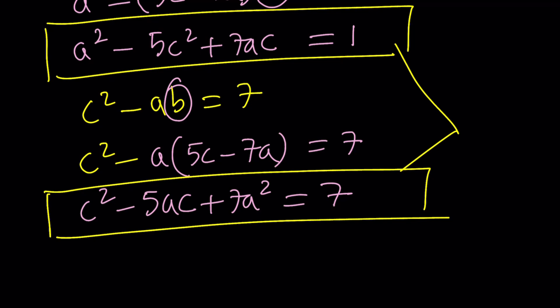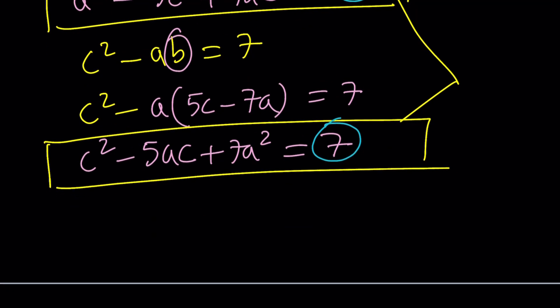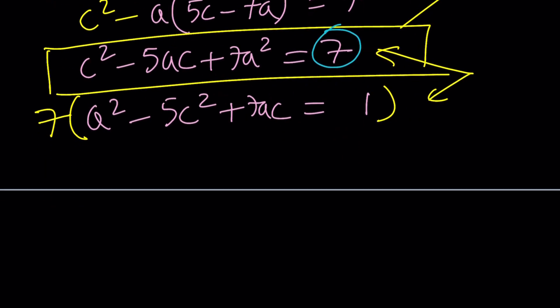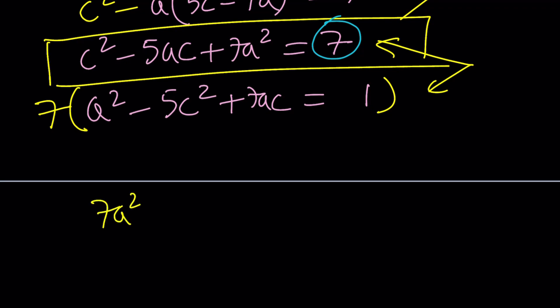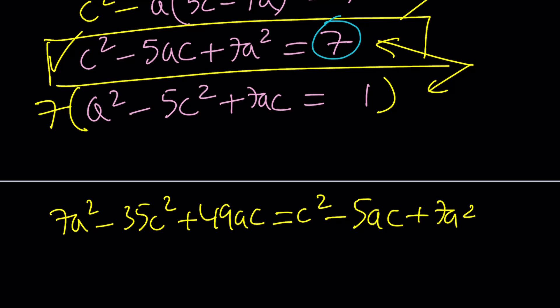Work together. We can use elimination. Substitution would be really hard because if you try to isolate one of the variables, you have to deal with a quadratic equation, a lot of radicals, so on and so forth. There's a much better way. We can actually get rid of the constants and turn this into a quadratic equation in a over c or c over a. Since this one is 1 and this is a 7, let's go ahead and multiply the top equation by 7. a squared minus 5c squared plus 7ac equals 1. I'm going to multiply both sides of this equation by 7 and then set it equal to the other equation. So, I get 7a squared minus 35c squared plus 49ac equals 7. And that equals c squared minus 5ac plus 7a squared from here. Since two things are equal to 7, they're equal.